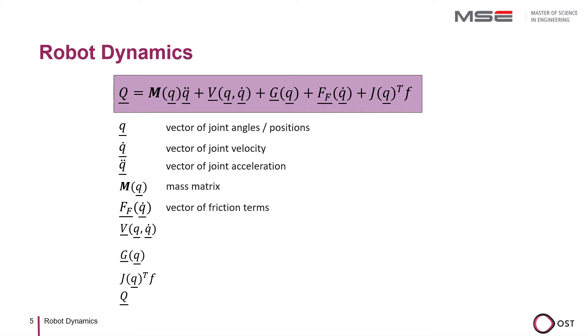Friction is modeled in the term FF. The term V represents the so-called false forces. These are Coriolis and centrifugal terms.